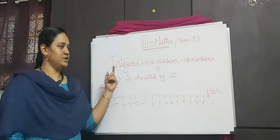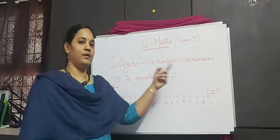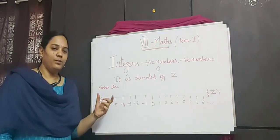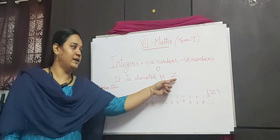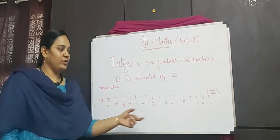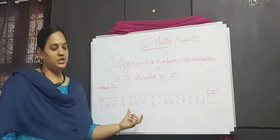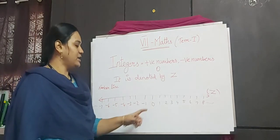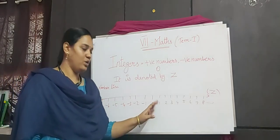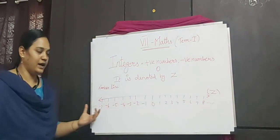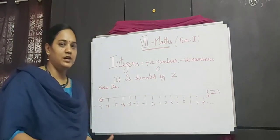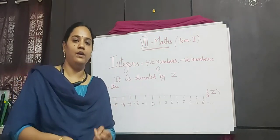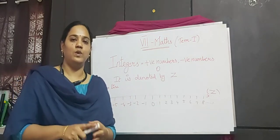Integers include positive numbers, negative numbers, as well as zero. It is denoted by capital letter Z. Let me explain integers using a number line. On the number line, integers include zero, positive numbers, as well as negative numbers.